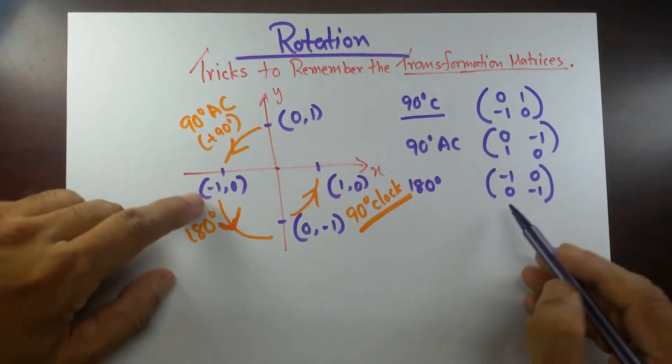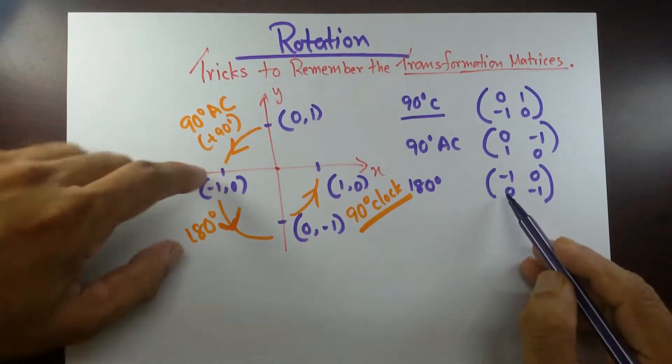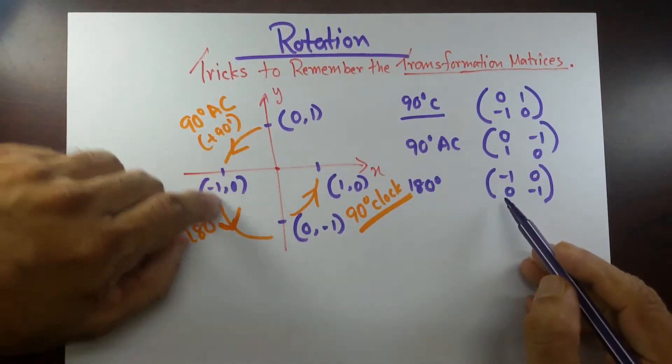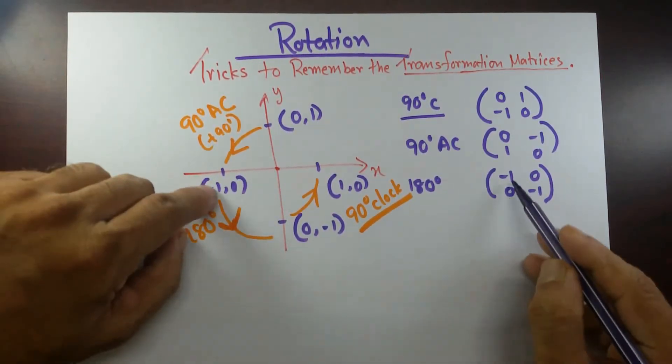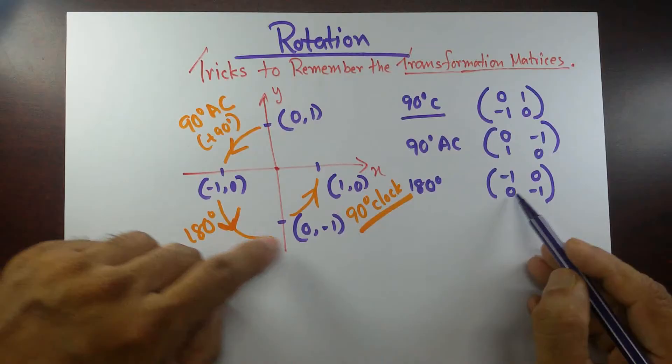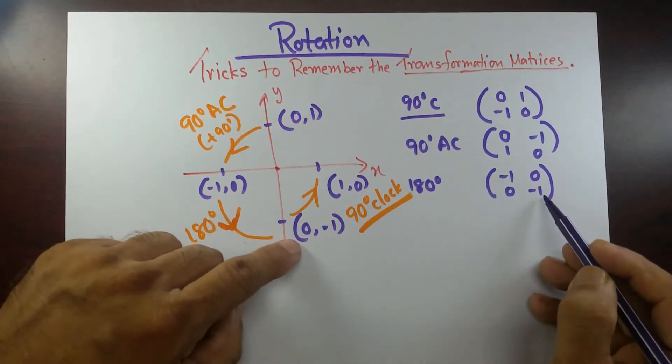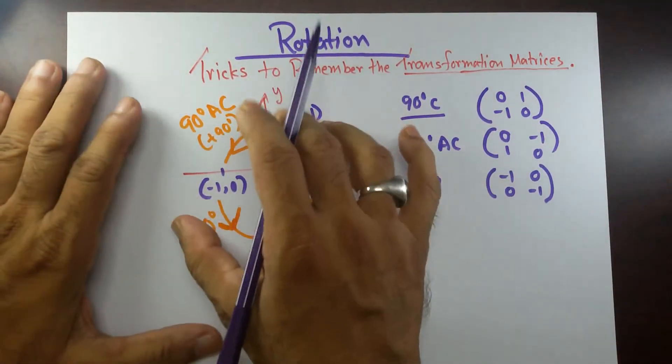For 180 degree, the arrow shows from the right unit to the left unit: minus 1, 0. And the upward unit maps to 0, minus 1. So the 180 degree matrix is: minus 1, 0, 0, minus 1. It's that easy if you can remember that.